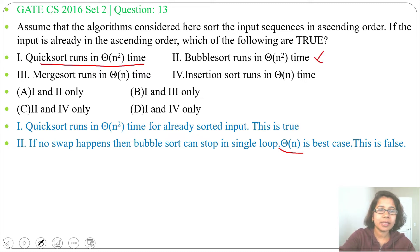Next, third statement: Mergesort runs in Theta of n time. For best case, worst case, and average case, Mergesort always runs Theta of n log n time. As here it is given Theta of n time, that's why this is false.